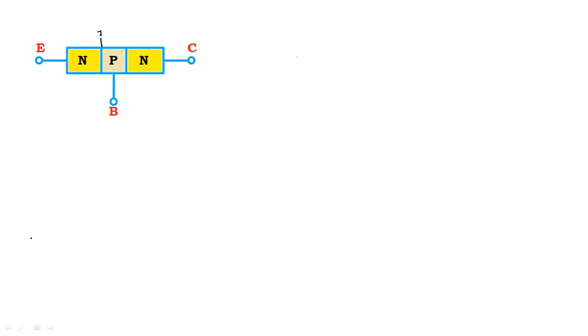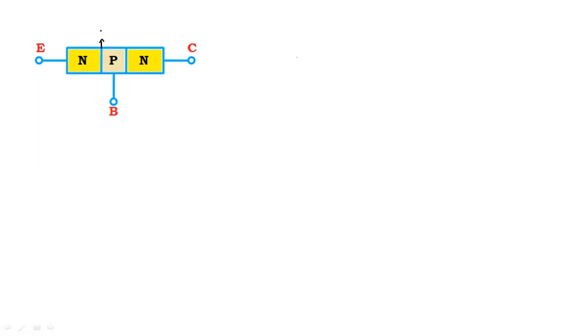The NPN transistor has two junctions. Assume that this is junction J1 and this is junction J2. It is called a bipolar junction transistor because it has two junctions and two poles.